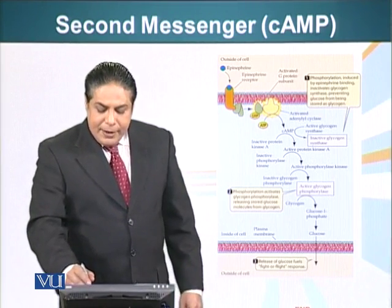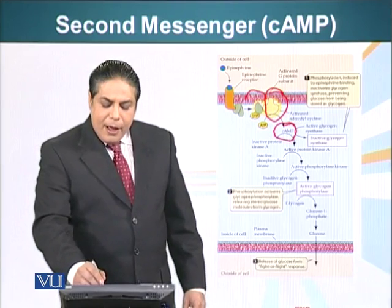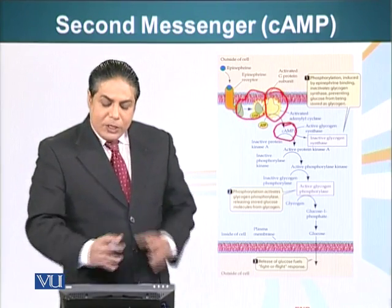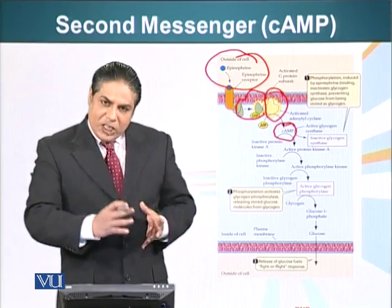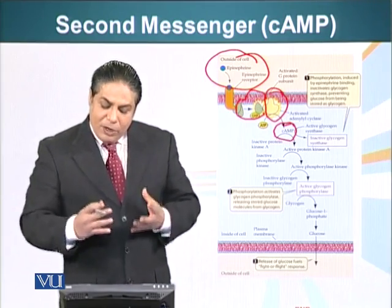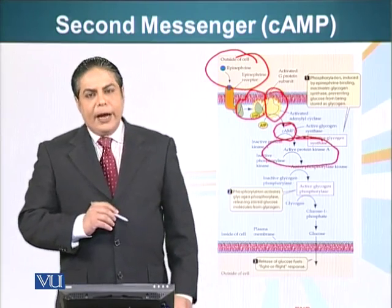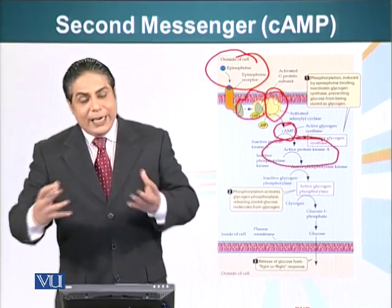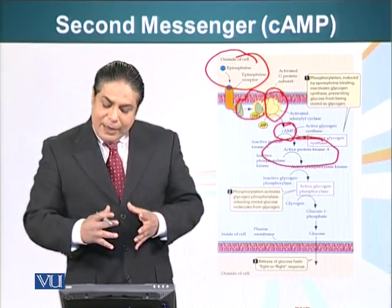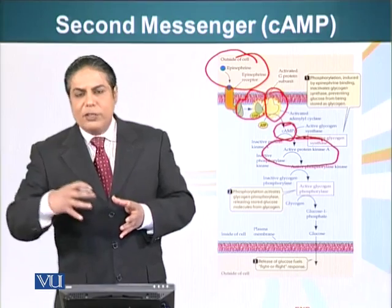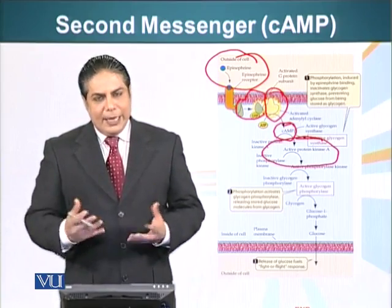Protein kinase A is activated in response to cyclic AMP, which is produced by adenyl cyclase, which was activated by the alpha subunit of the G protein. This alpha subunit dissociated from beta and gamma in response to epinephrine binding to the epinephrine receptor on the liver cell. Cyclic AMP then bound to the regulatory subunits of protein kinase A, the complex fell apart, and the catalytic subunits were activated. These catalytic subunits then phosphorylated enzymes that resulted in release of glucose from glycogen. This is a beautiful system — an example of how G protein-linked receptors work.